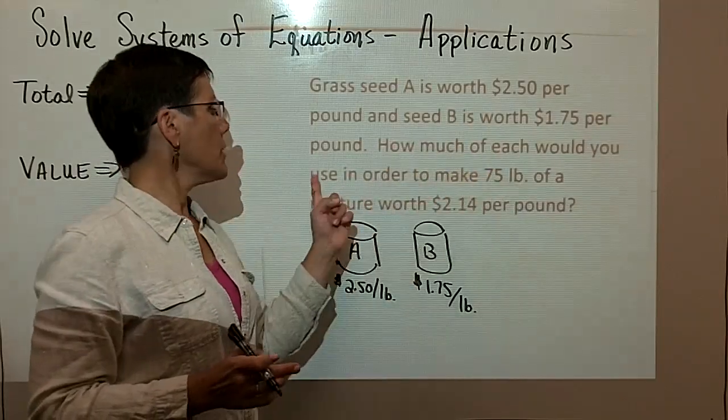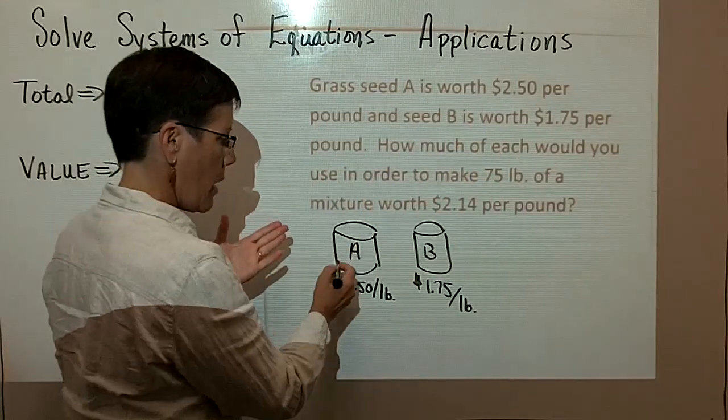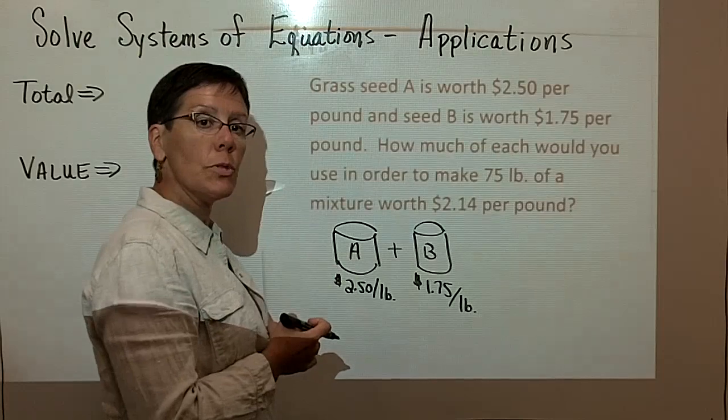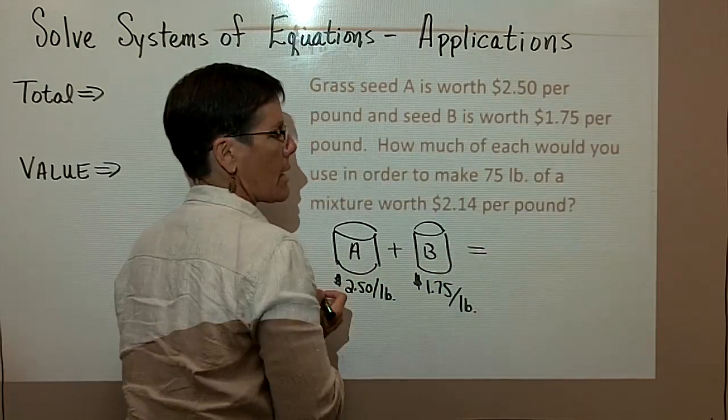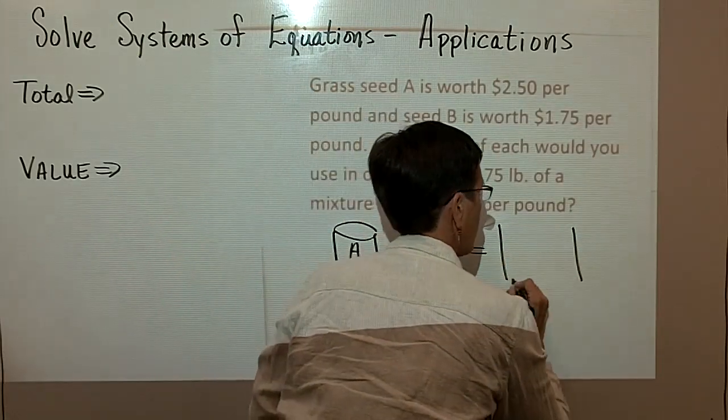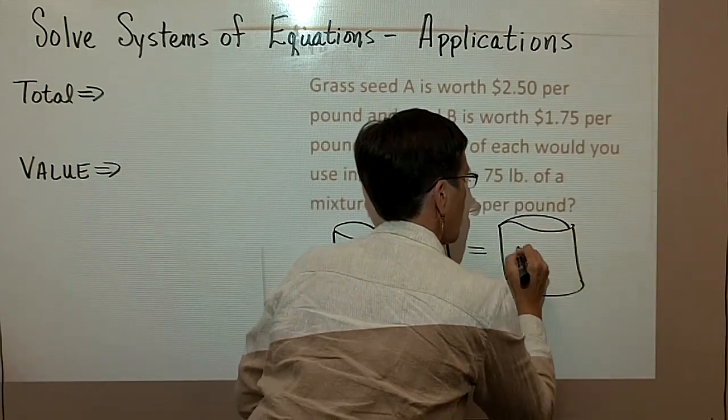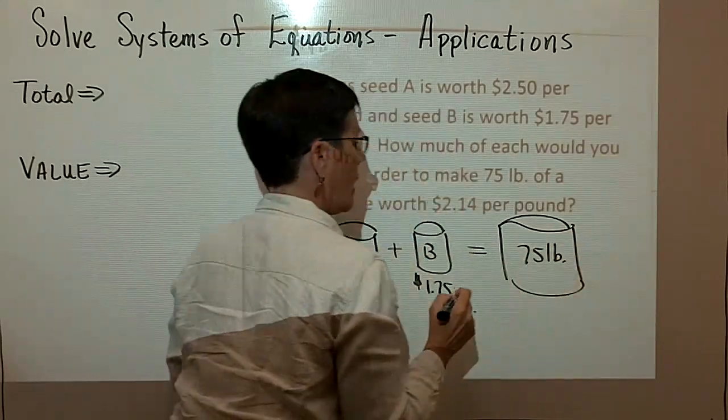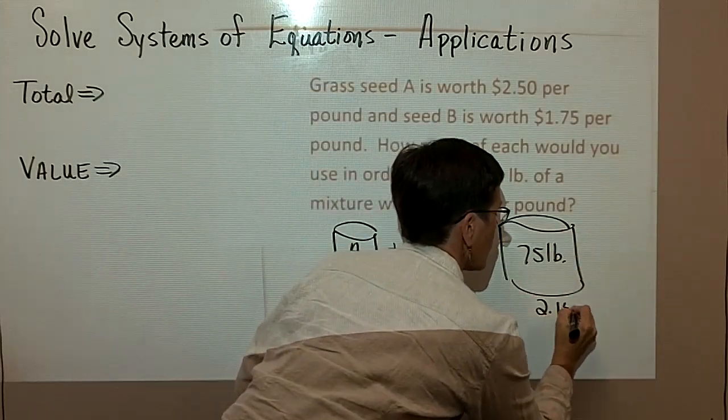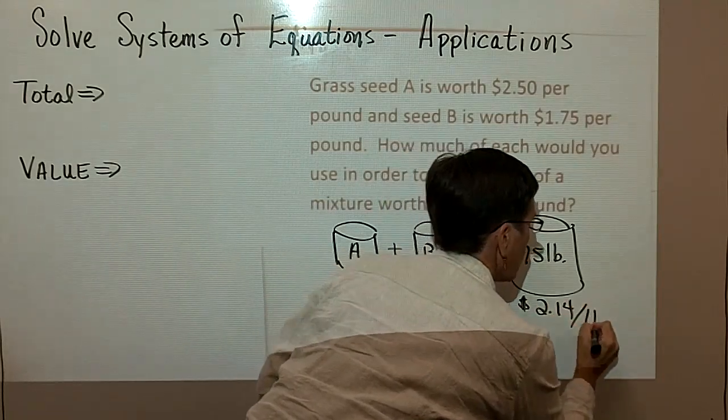I want to know how many pounds of each of those would you use? How many pounds of each of those would you use in order to make 75 pounds that cost $2.14 per pound?